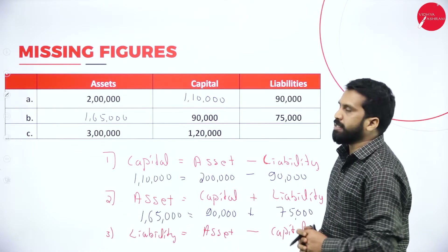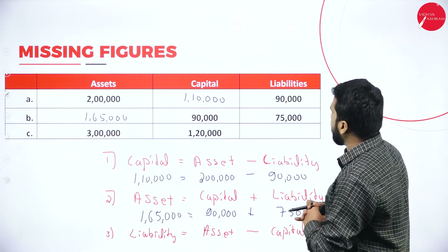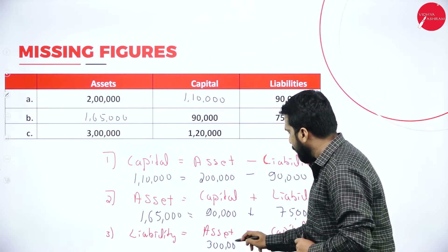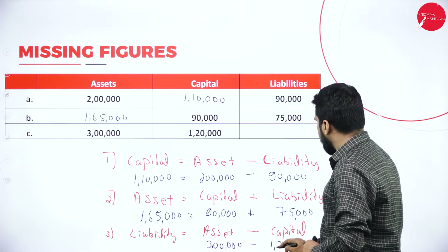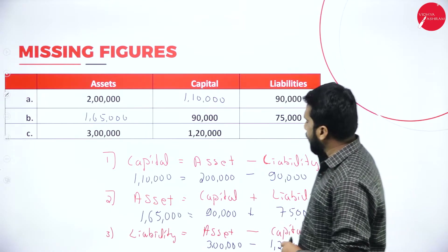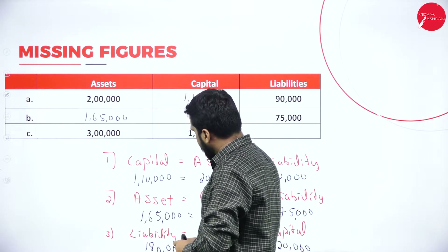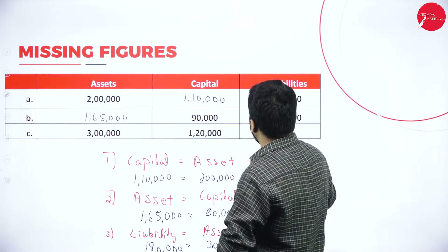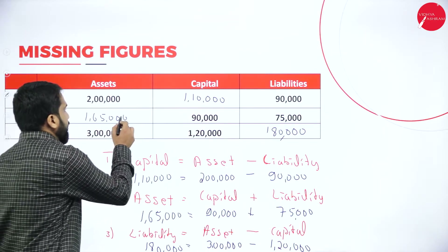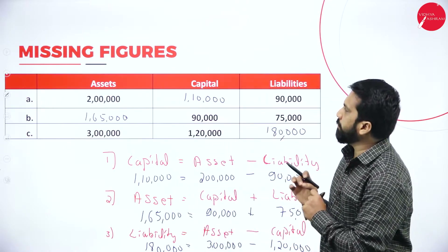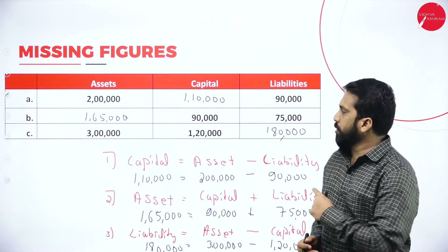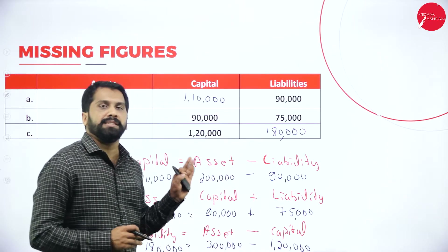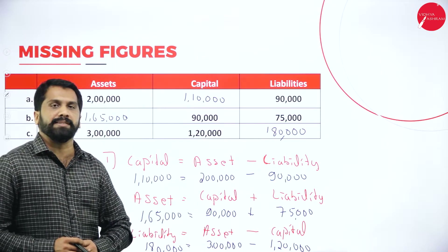Example three: you have asset and capital but liability is unknown. Asset is three lakh, capital is one lakh twenty thousand. Three lakh minus one lakh twenty thousand equals one lakh eighty thousand — that is your liability. So you now have answers for capital, asset, and liability. This is all about the missing figure in the balance sheet. You may expect this for five marks. I'll do only one problem per type because the concept is the same — remember these formulas.